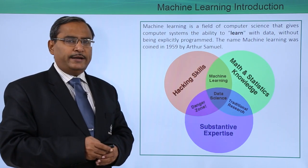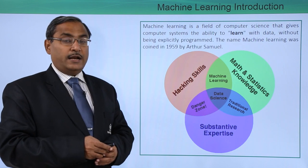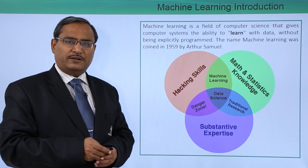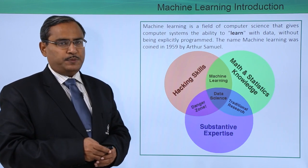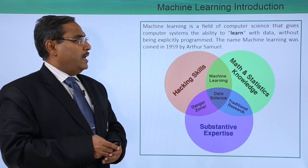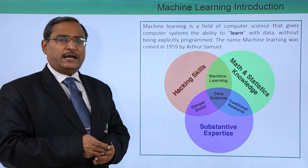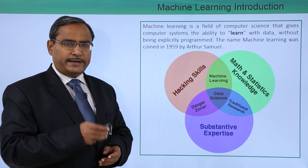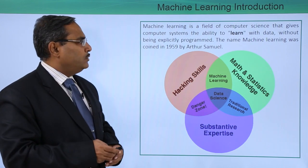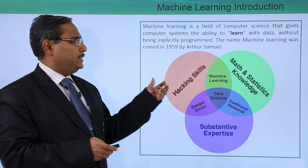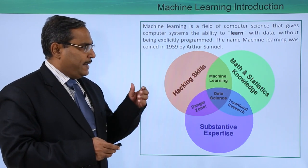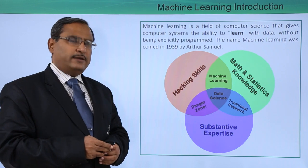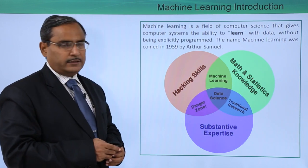There is a new arena in computer science. Nowadays it is very much important and very much attractive for all computer science people, where the computer science is making computers enabled to learn from data without having any explicit programming. The name machine learning was coined in the year 1959 by Arthur Samuel.